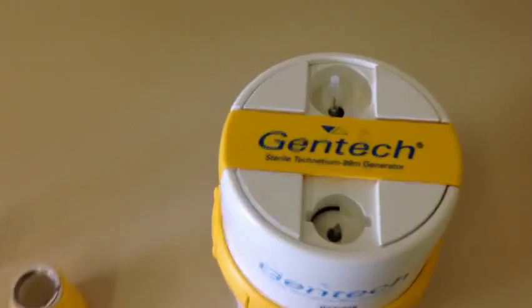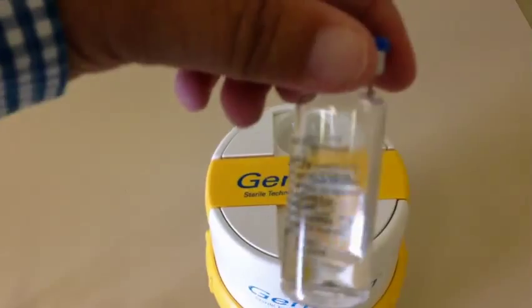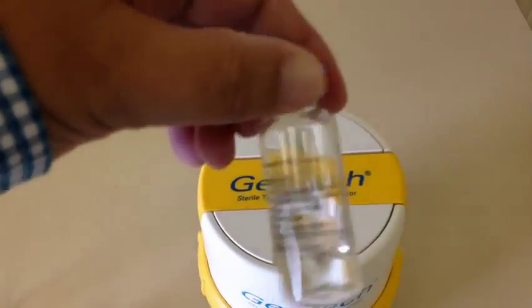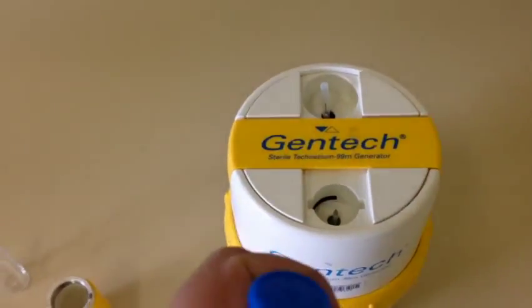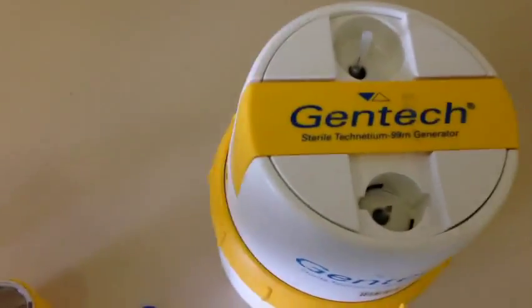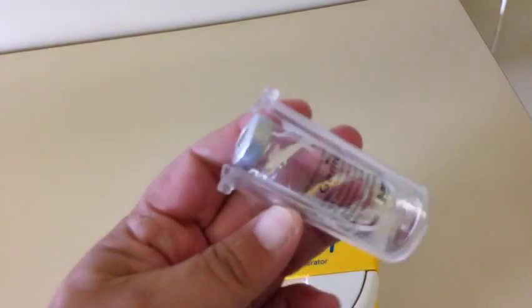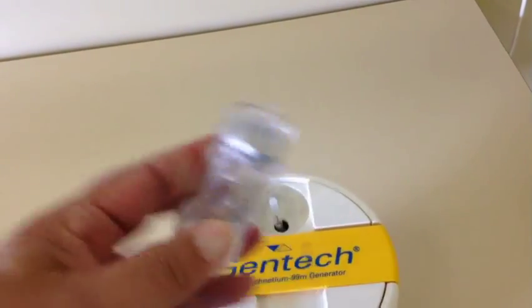And so what we would do is that we would actually have a small volume of saline. So a 40 ml vial with 20 mls of saline in the bottom of it. We'd pop the top of it, put it into this little housing.